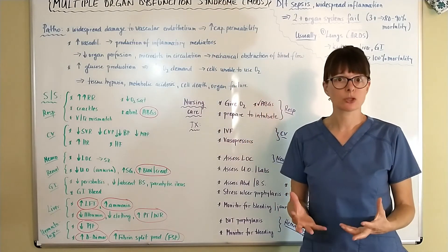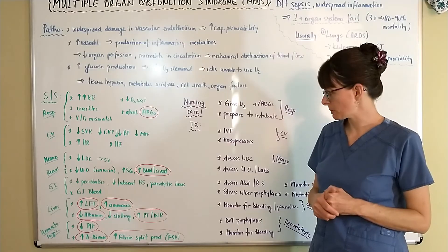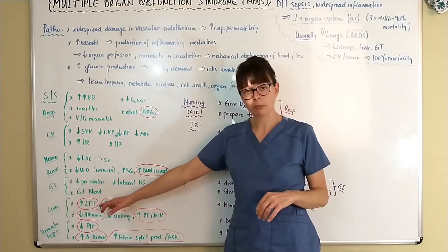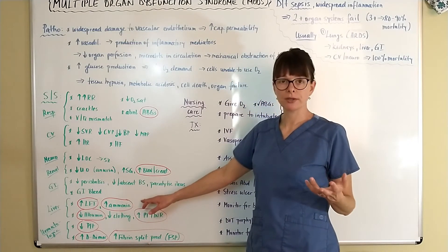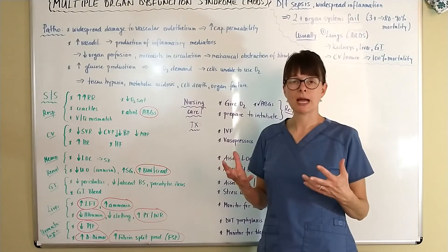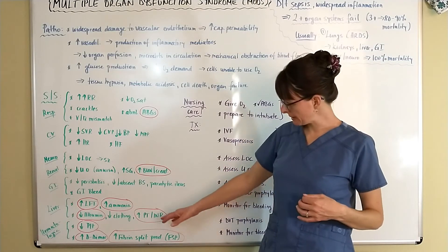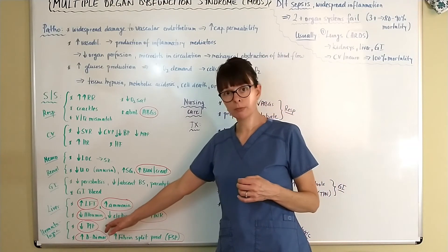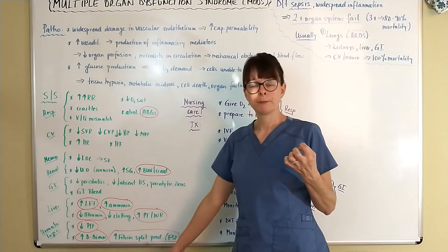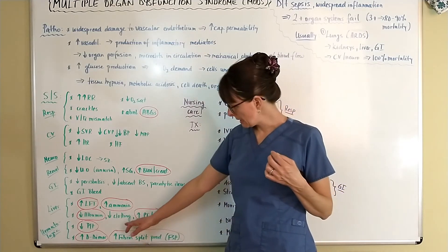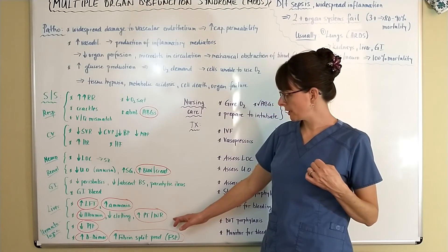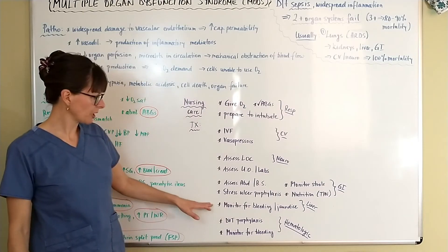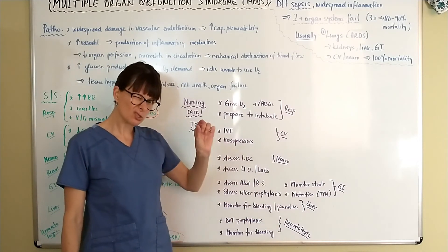When the liver starts to fail, liver function tests will be elevated, as will ammonia, a byproduct of cellular metabolism normally cleared by the liver. Since the liver is involved in albumin production — which keeps fluids in the intravascular space — and clotting, we may see elevations in PT and INR. Nursing care includes monitoring for bleeding and jaundice as bilirubin levels rise.